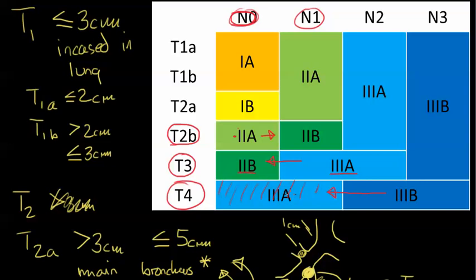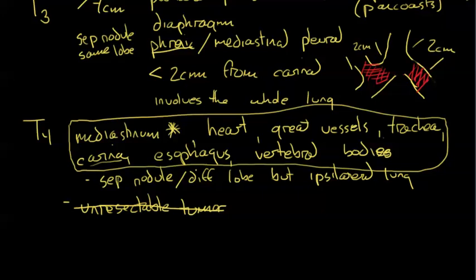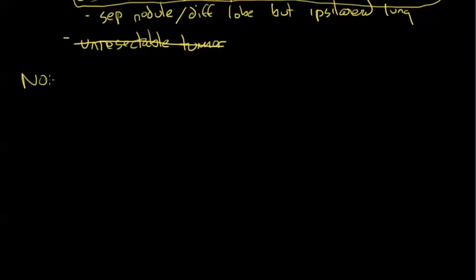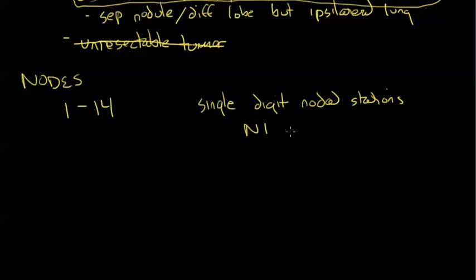What about N status? N is pretty easy. So let's go to nodes now. The nodes are pretty easy. It uses the Naruki diagram, as everybody's seen. The numbers are 1 through 14. And it's pretty easy. Single digit nodal stations.